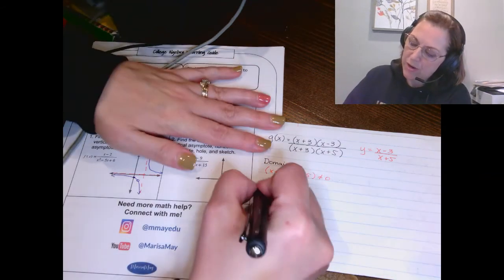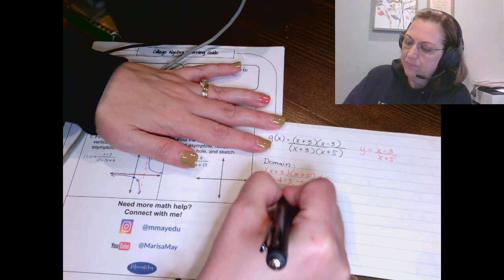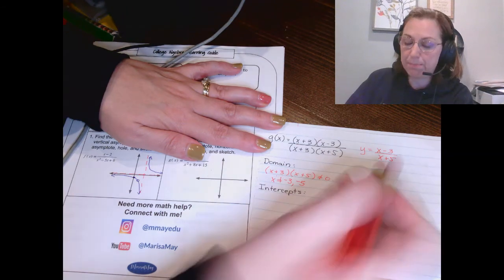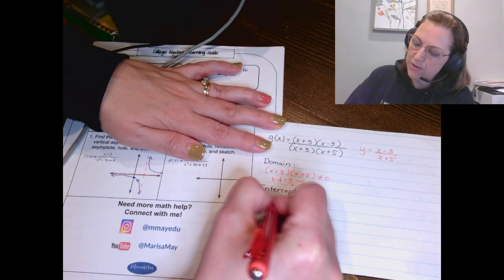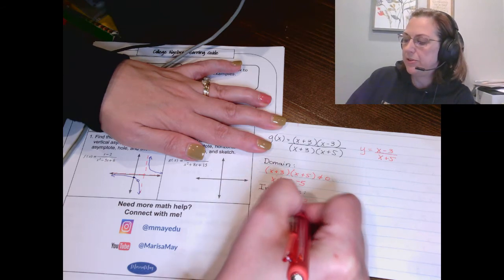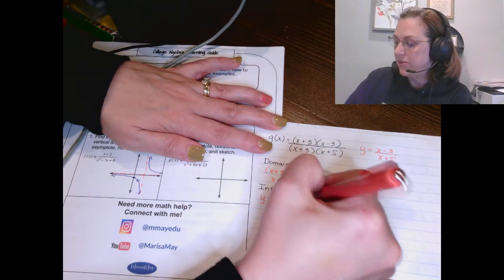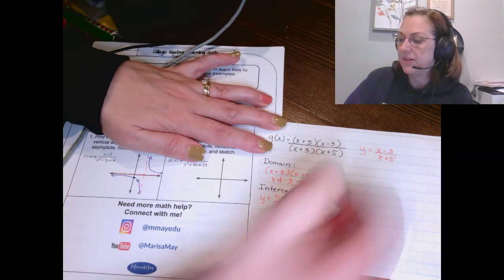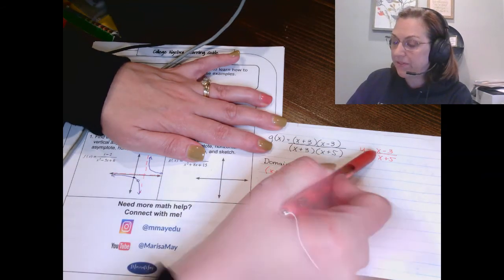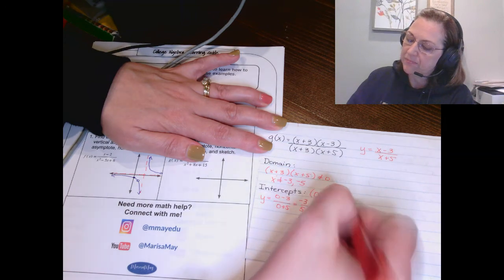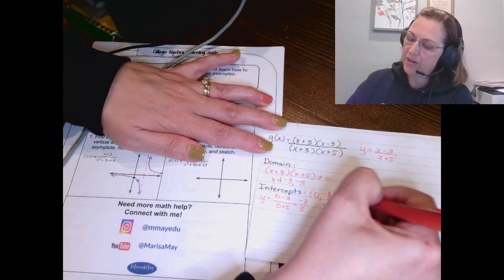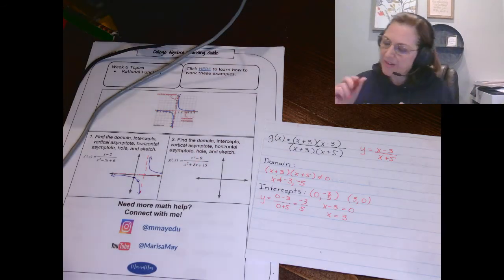Part 2. Let's do our intercepts. To find the y intercept, we substitute 0 for x in the simplified function. Put a 0 in for x. So my y intercept looks to be negative 3 fifths. So I've got 0 negative 3 fifths. My x intercept comes from setting the numerator of the simplified function equal to 0. So I have an x intercept at x equals 3. We didn't have one of those before, but we do this time.